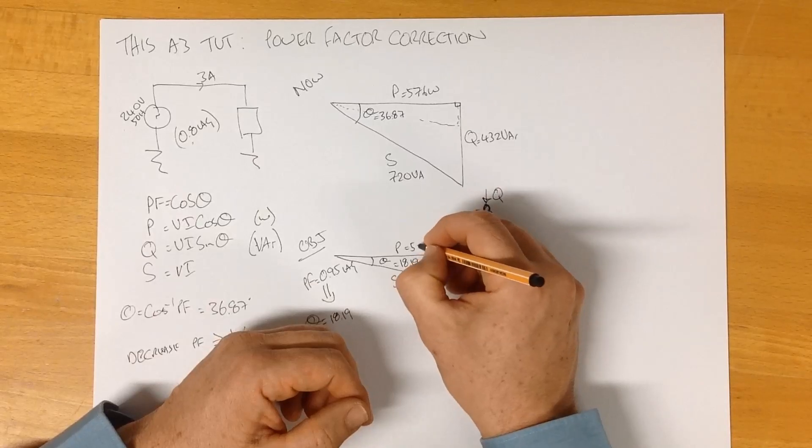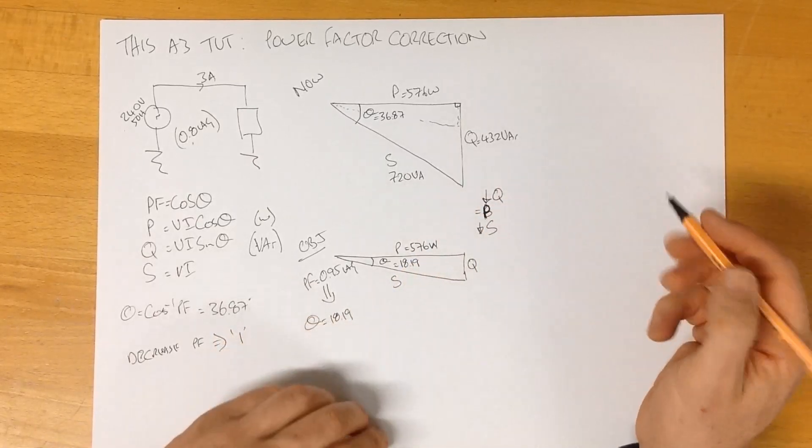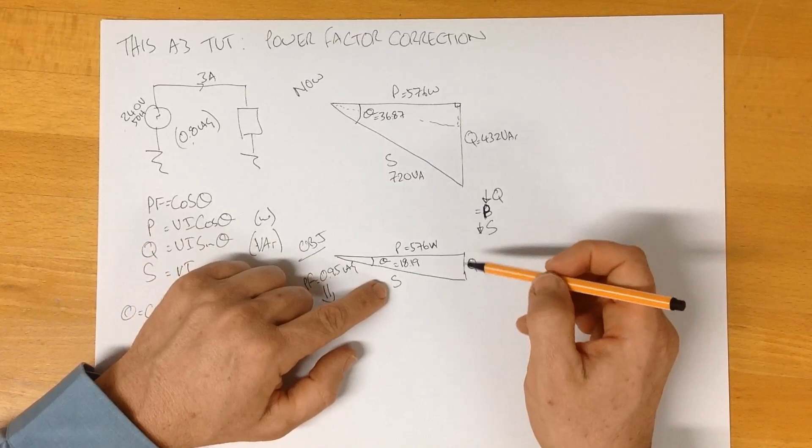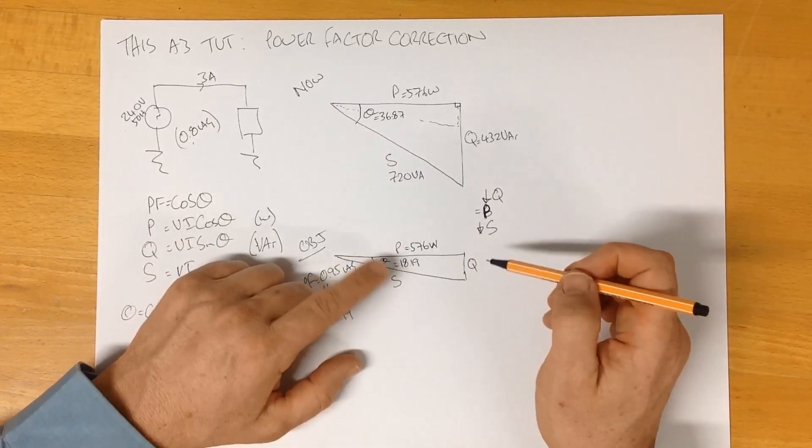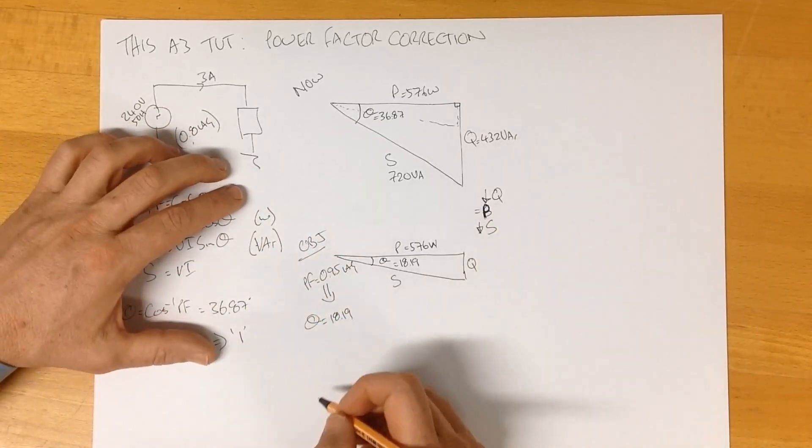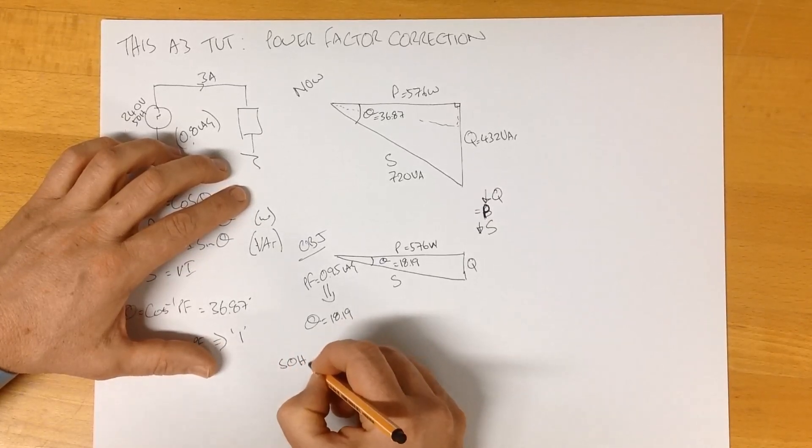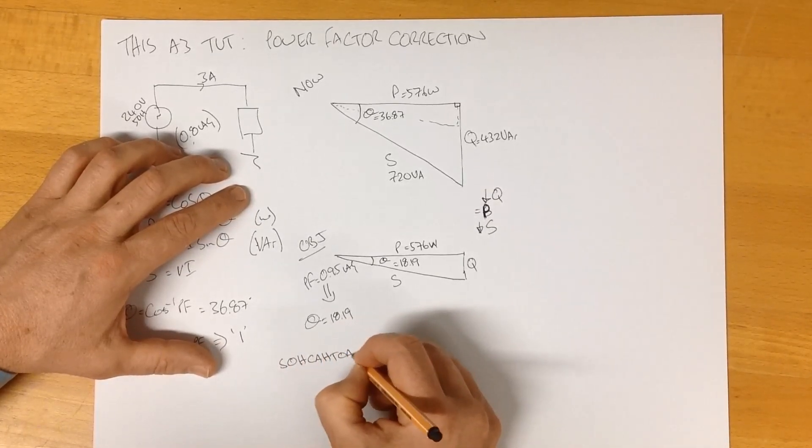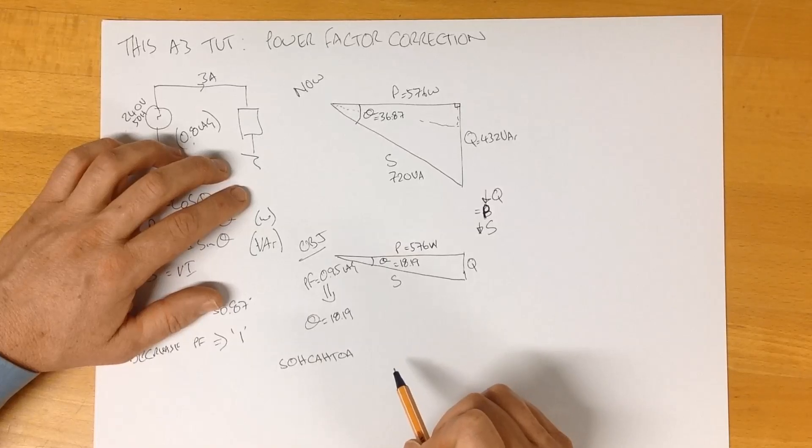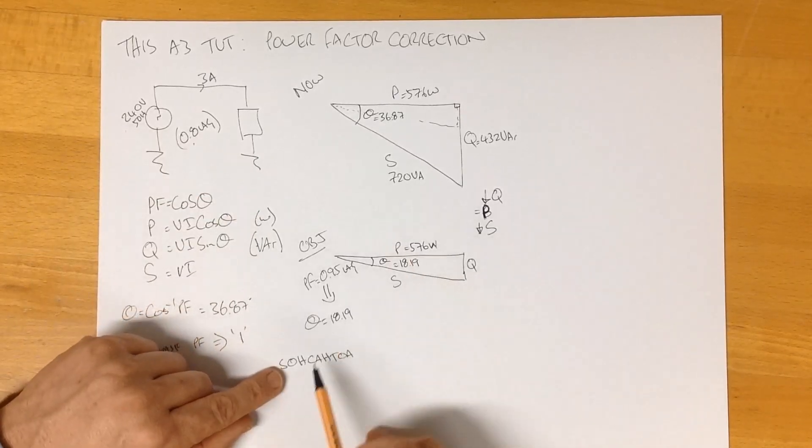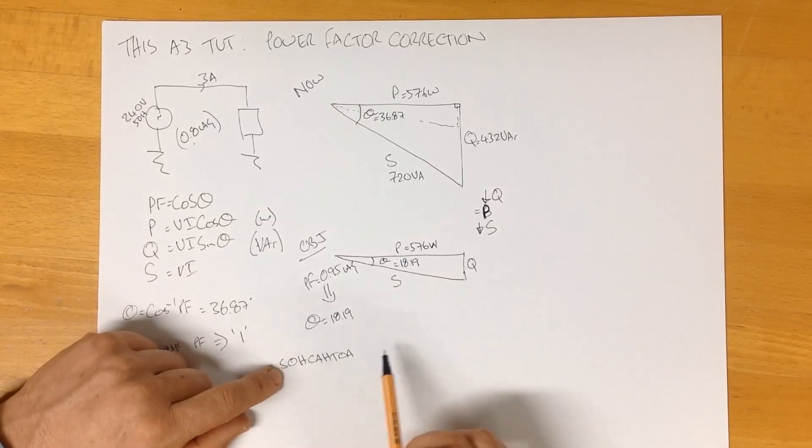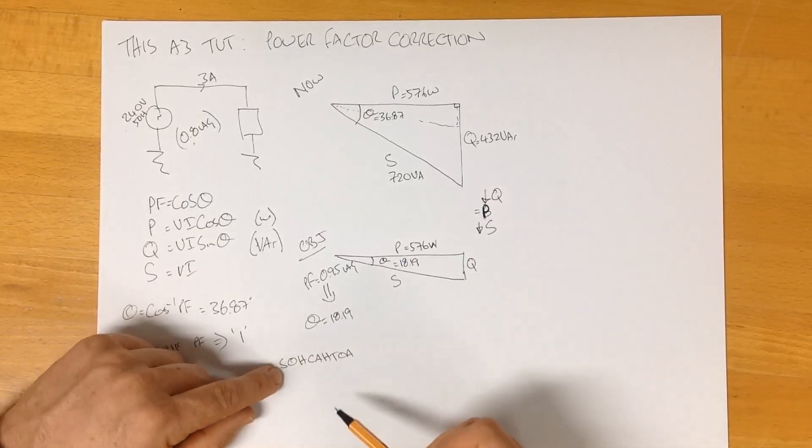So this is what we're trying to achieve. P will stay the same. And so therefore, we now need to find out the value of S and Q to complete our target, our desired power factor triangle. And there's various ways we can do that, basically using any variation on the SOHCAHTOA rule. The SOHCAHTOA way is a way of remembering that if we know any two of these four, we can find the others. For example, the sine of the angle equals the opposite over the hypotenuse. If you're not familiar with this, I suggest you go off and have a look.